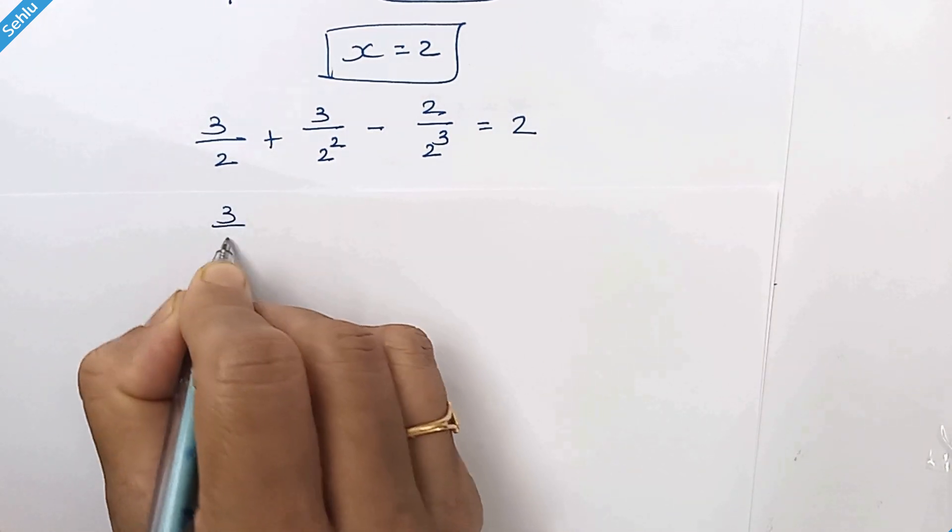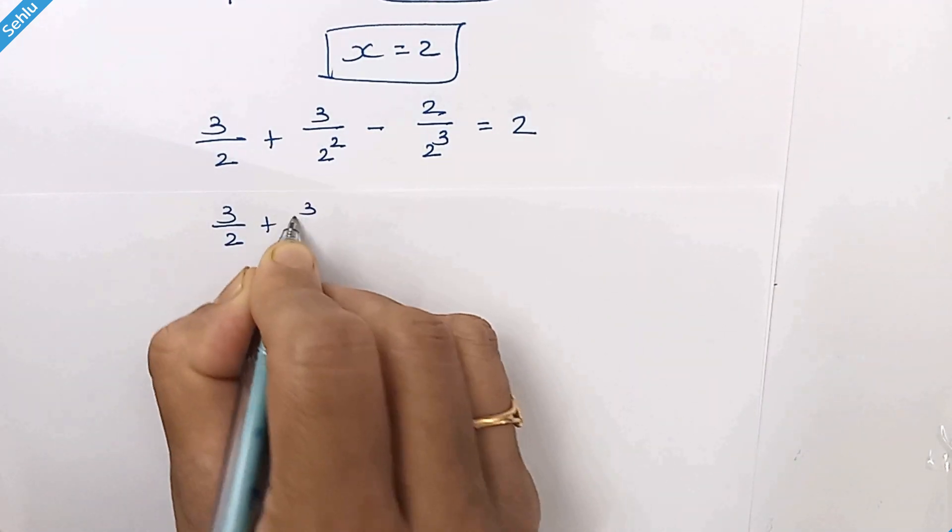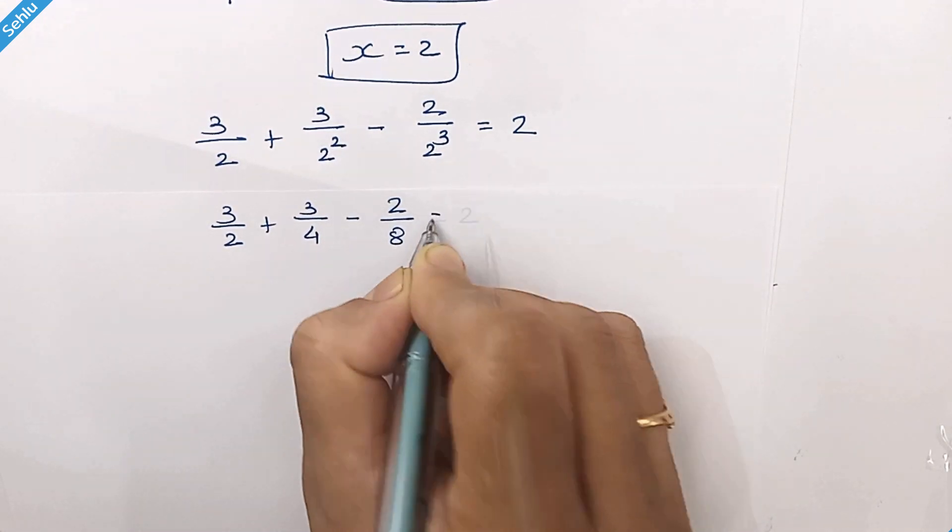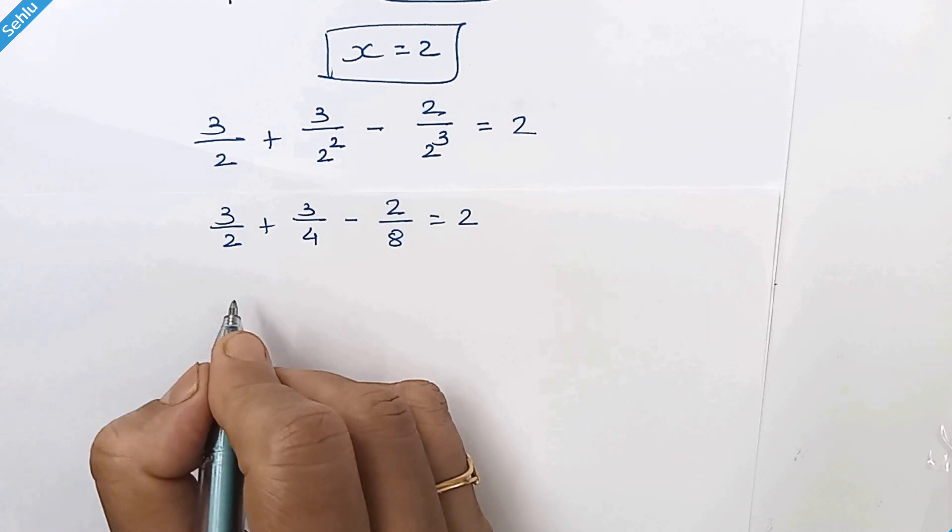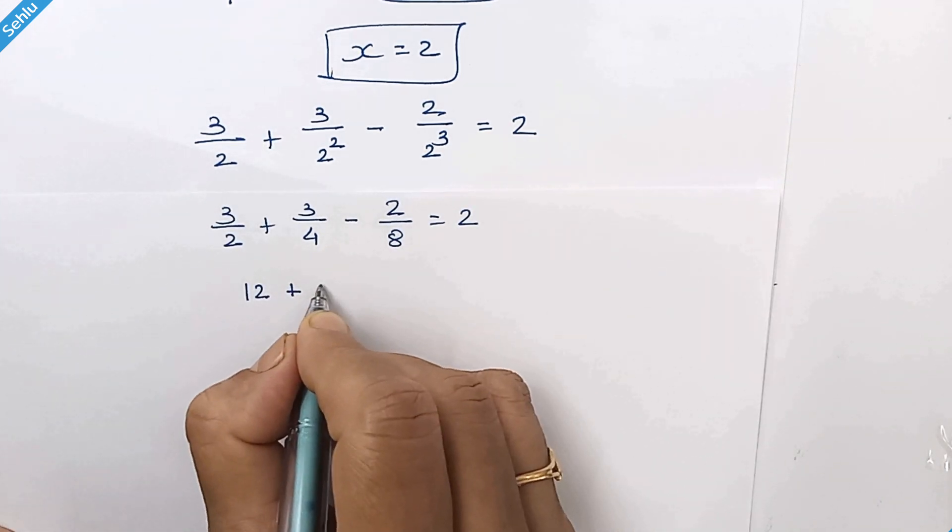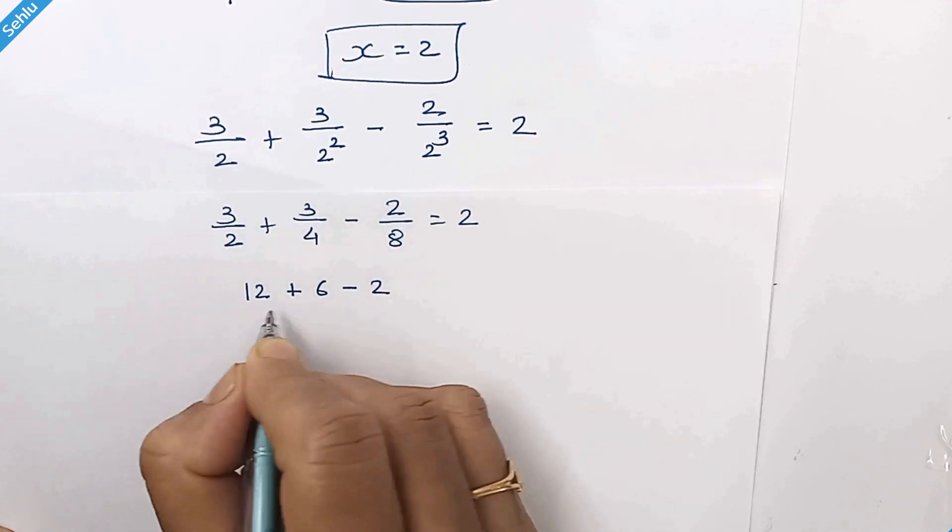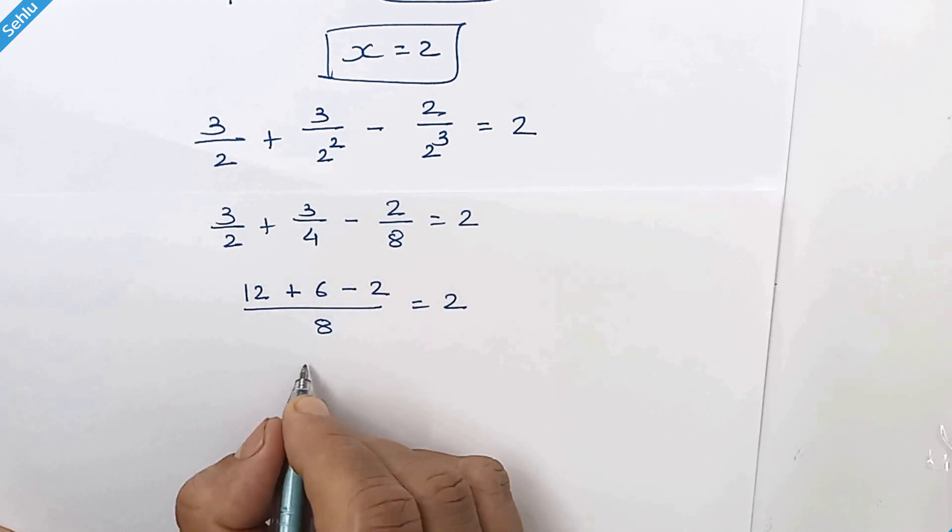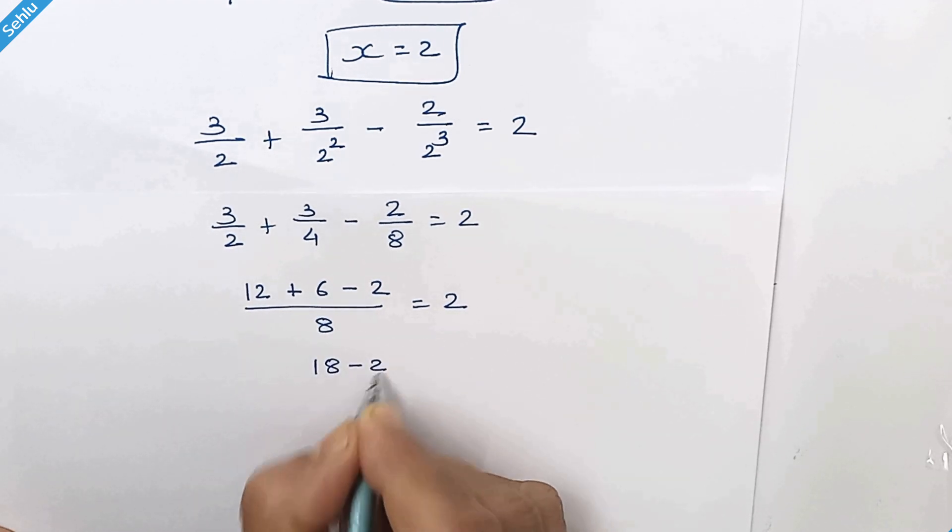So we have 3 over 2 plus 3 over 4 minus 2 over 8. If we take LCM here we have 12 plus here we have 6 minus 2 over 8 so 12 plus 6 is 18 minus 2 over 8.